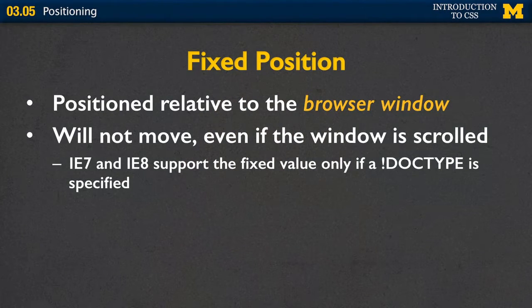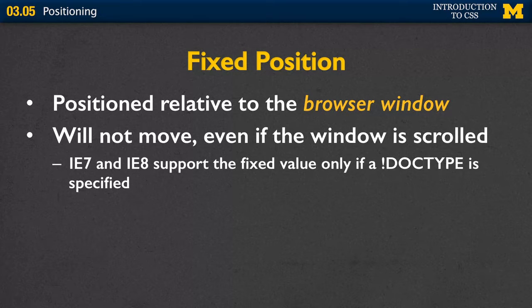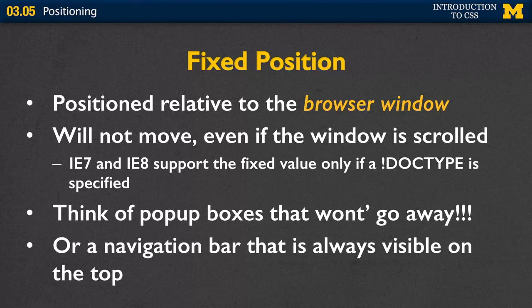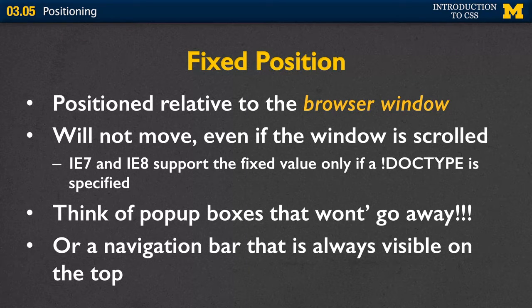The final position is called fixed. The fixed position is relative to the browser window. This is how they're able to create pages where you get a pop-up that you just can't get to go away — you keep scrolling and it's following you. They've done that using the fixed position. That element is not going to move even if the window is scrolled. Just so you know, if you're using an older browser and designing for IE 7 or 8, this only works if you're using an HTML5 doc type. Think of fixed position as those sticky navigation bars that stay visible as you scroll through the page.